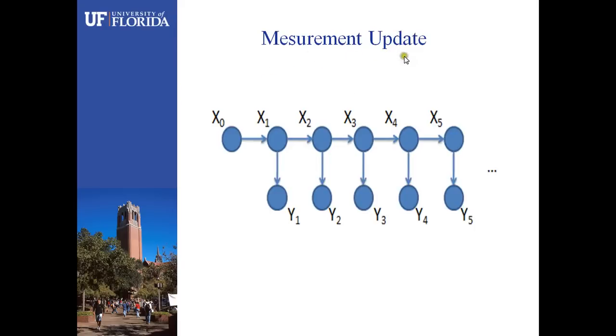Here is the measurement update structure. Actually, it is a recursive structure. From xn, we can not only obtain xn plus 1, but also get yn, and then it continues.